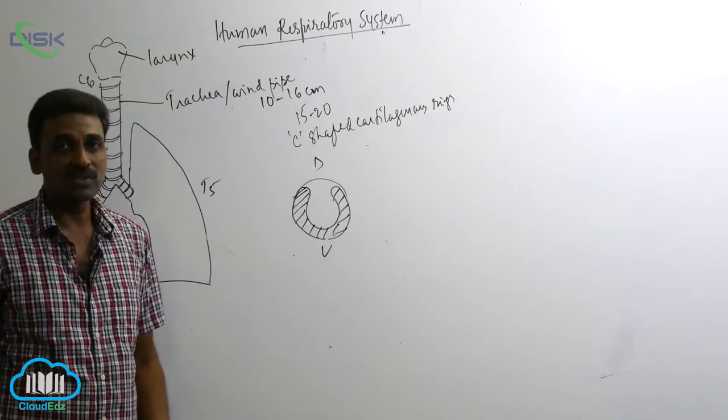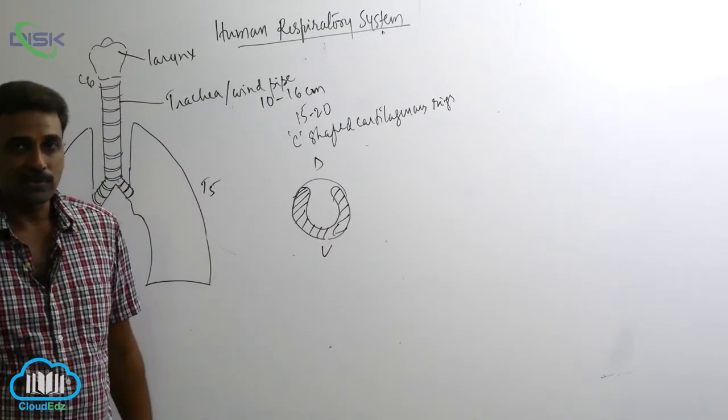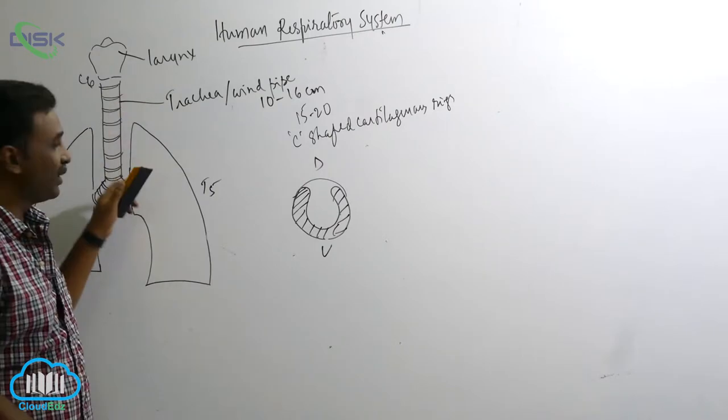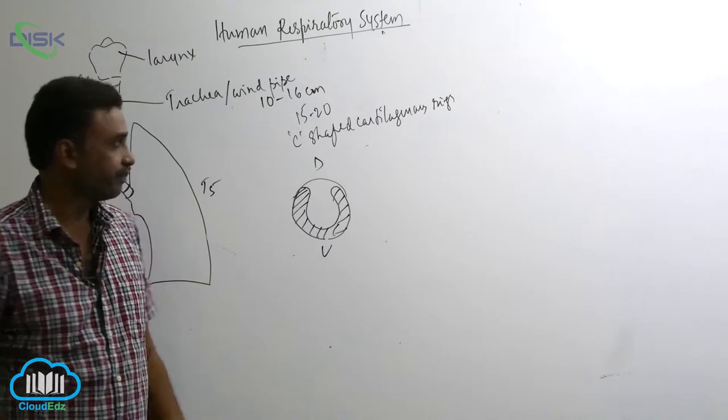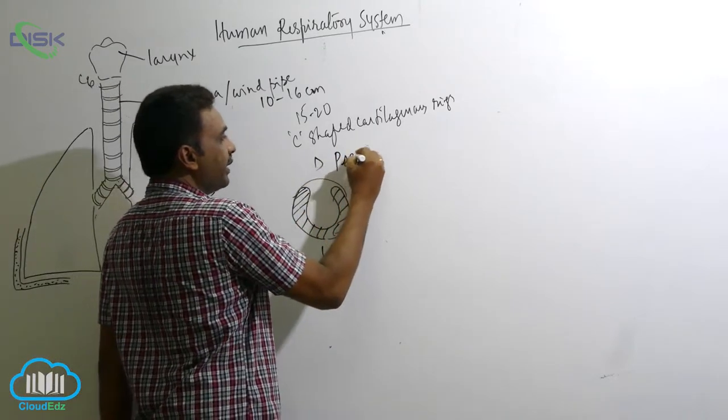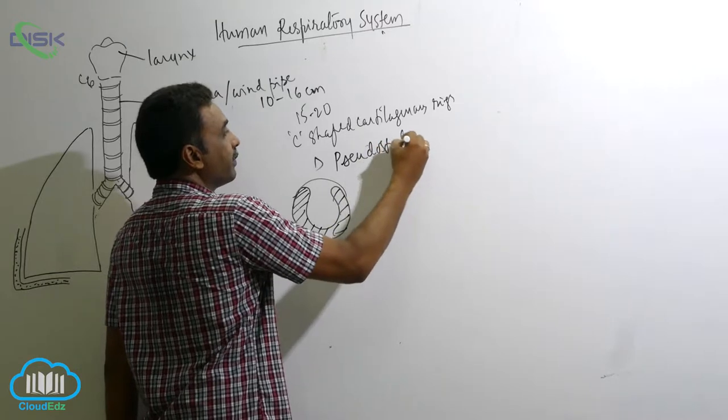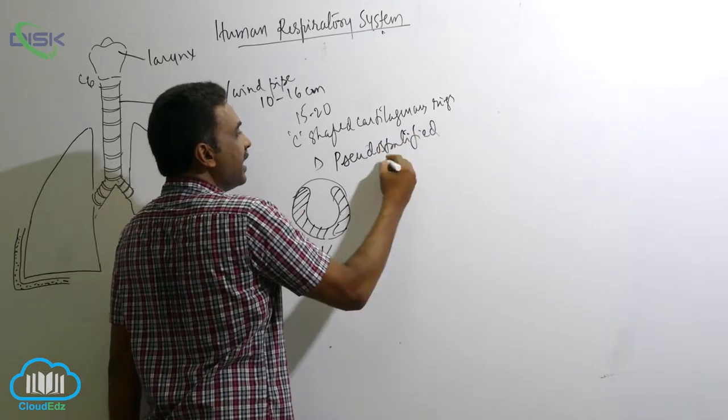If I remove that rings, the trachea collapses. And inside you can see there is pseudo stratified ciliated epithelium.